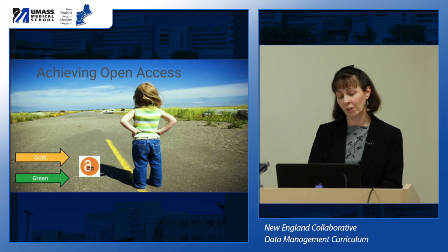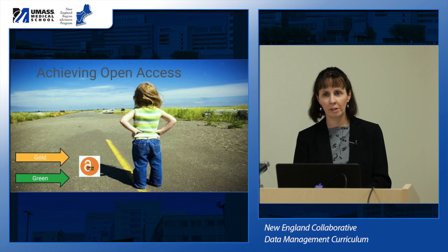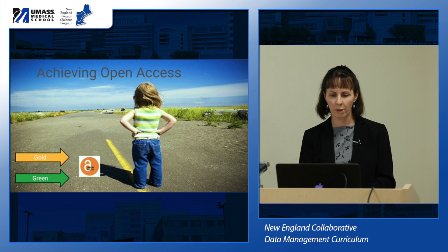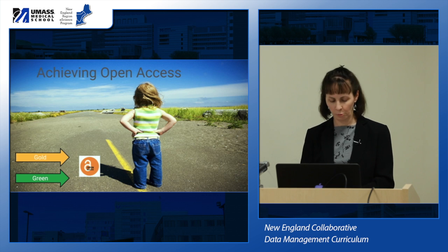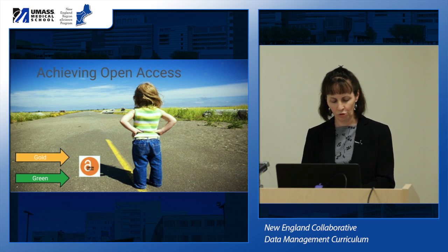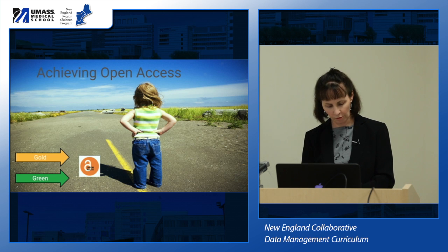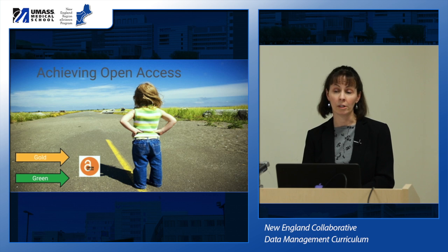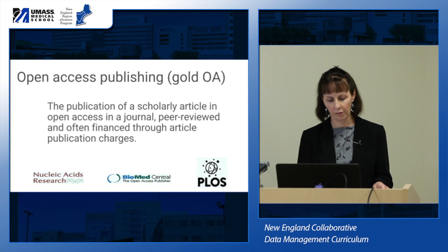There are generally two roads or mechanisms for making scholarship open: green open access and gold open access. Gold open access is publication through open access journals or subscription journals that offer an immediate open access option to authors. Green open access is through self-archiving in open access repositories. We'll talk about each of these in more detail.